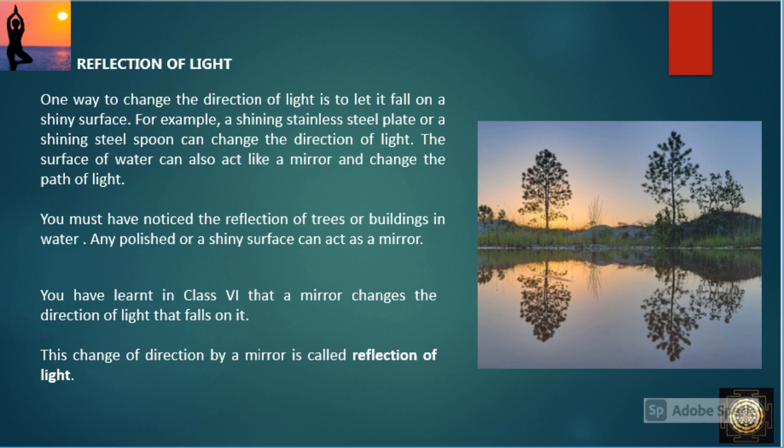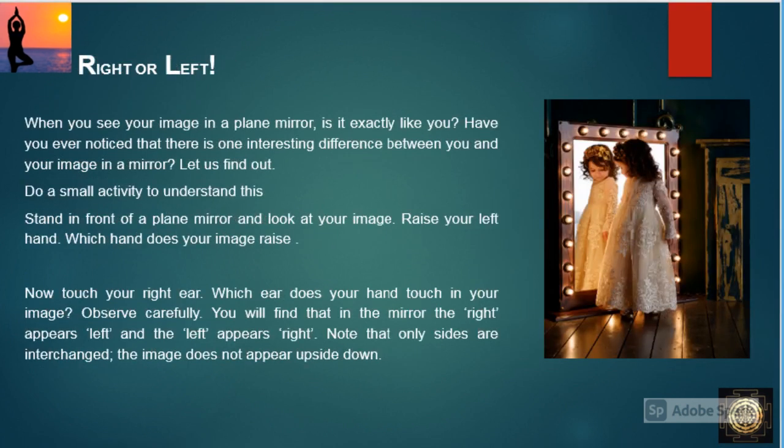You must have noticed the reflection of trees or buildings in water. Any polished or shiny surface can act as a mirror. You have learned in class 6 that a mirror changes the direction of light that falls on it. This change of direction by a mirror is called reflection of light.